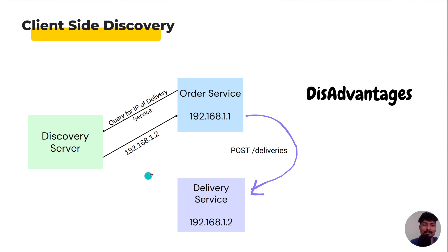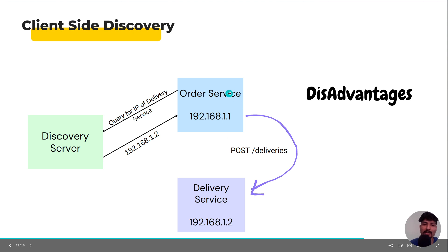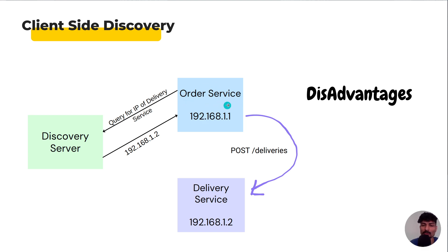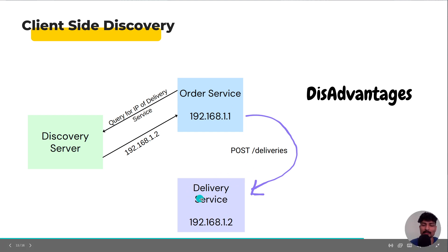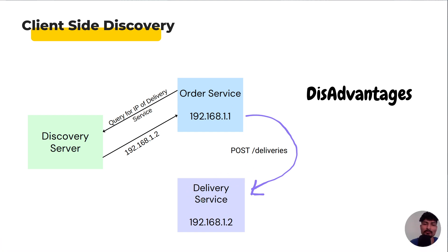Client-side discovery has disadvantages as well. One disadvantage is that we need to implement the logic of querying the IP address through the discovery server in every microservice. For example, if order service is written in Java and delivery service is written in Golang, we need to implement that logic in both Java and Golang, resulting in multiple implementations and code duplication across microservices.